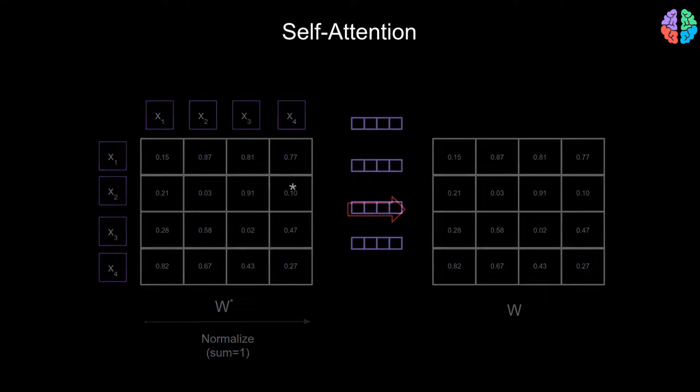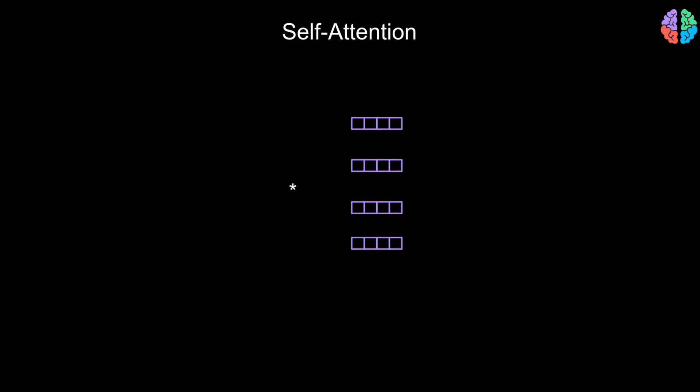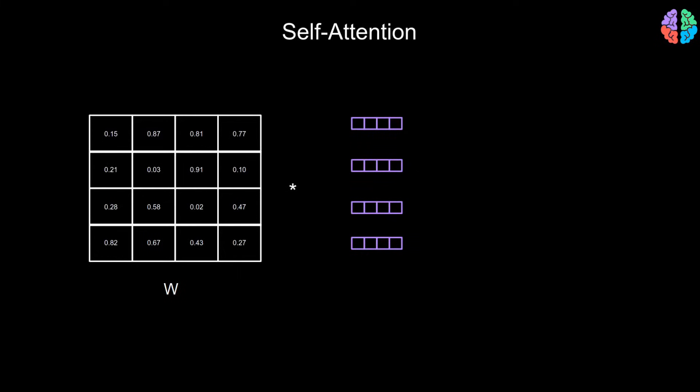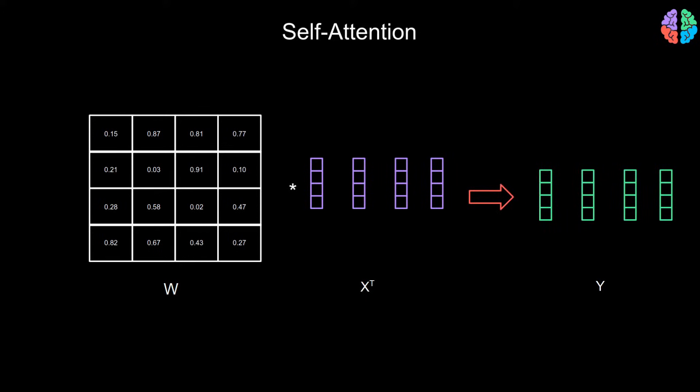After we compute this W matrix, we stack the inputs x1 to x4 to form a matrix X, and then transpose it to form X transpose. The product of these two matrices leads to our output matrix Y. The specialty of Y is that it's now context-aware.